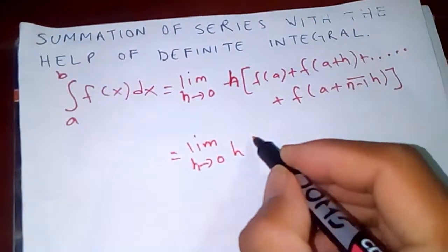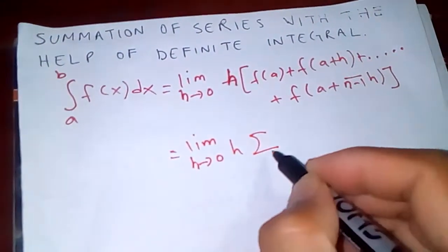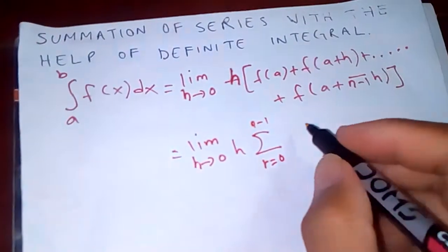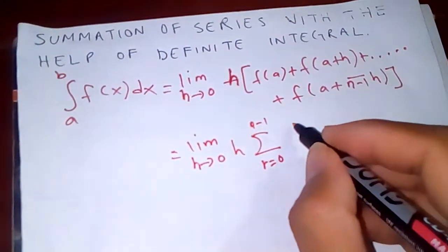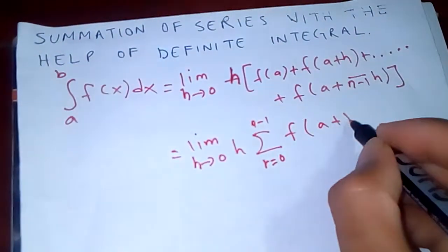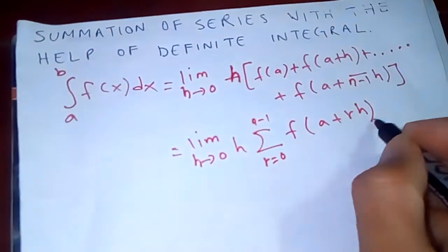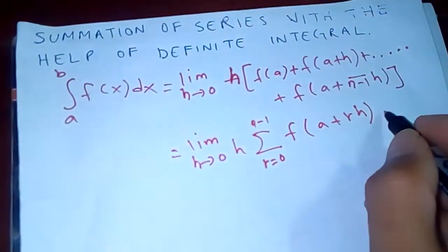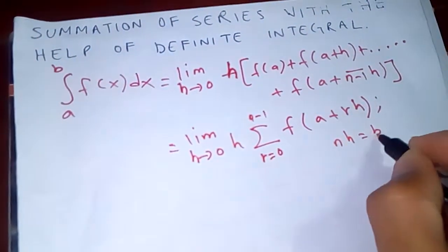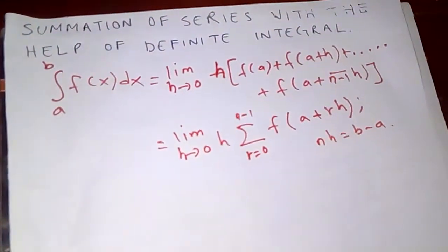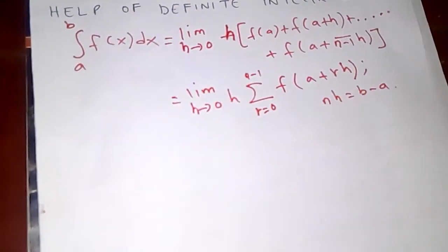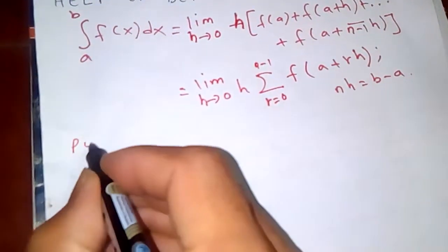If you put this in terms of summation, this will be the sum from r equal to 0 to n minus 1 of f(a + rh), where nh equals b minus a.